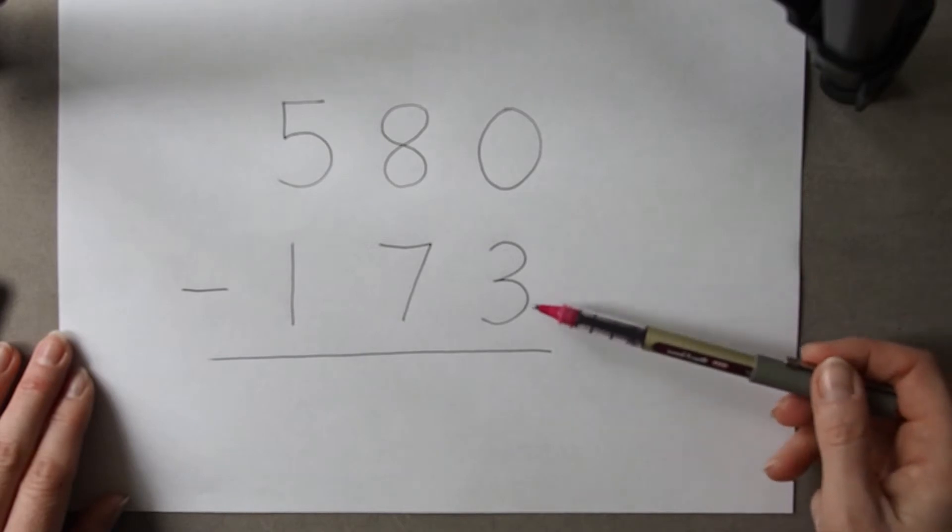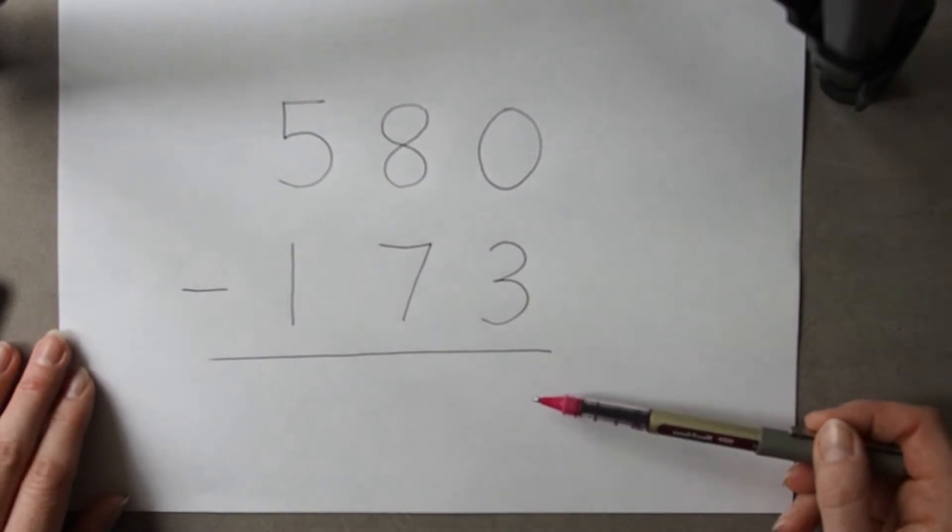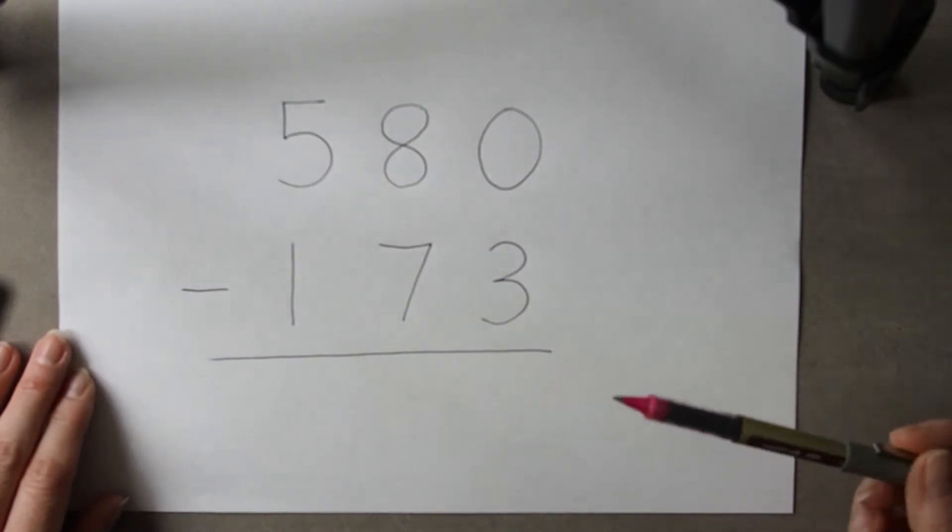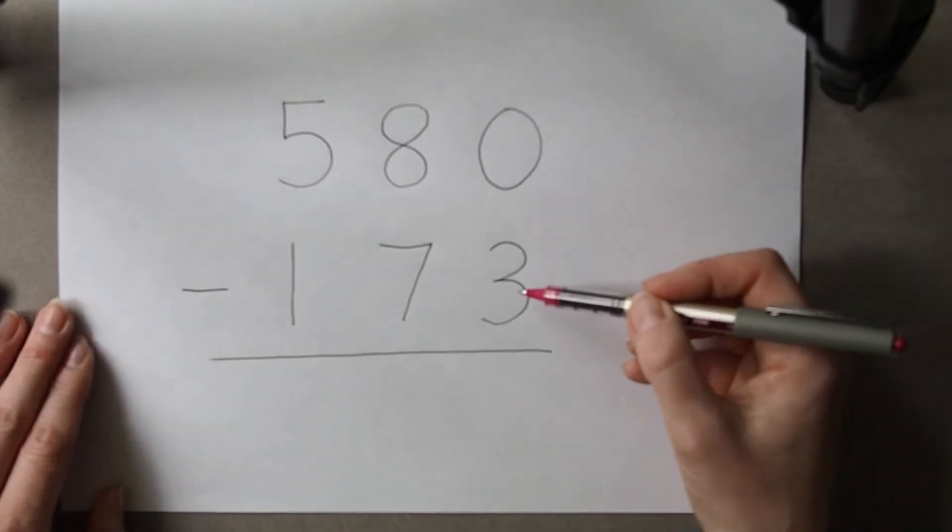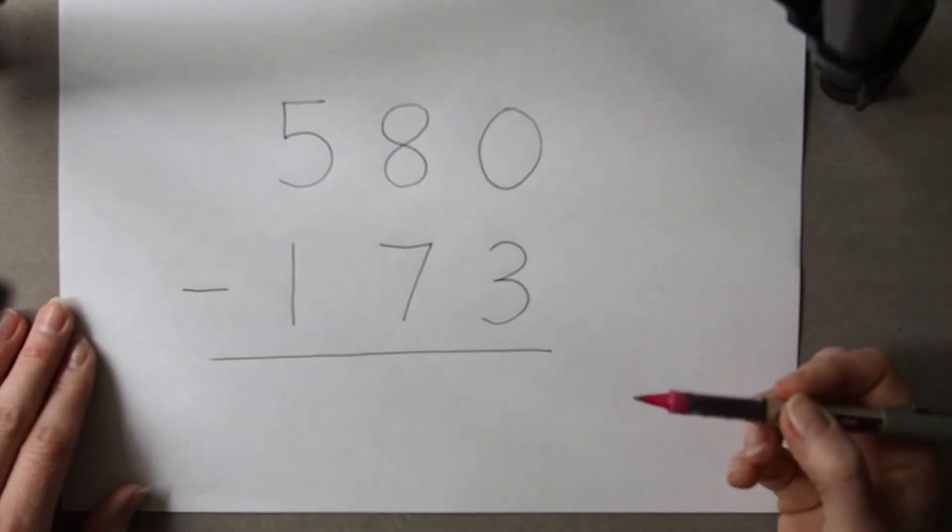Digits and because there is a zero, think that the answer is going to be three. If they do correctly say zero subtract three, I can't do that.